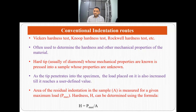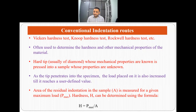In this approach, we have a hard tip — usually diamond — whose mechanical properties are known. As the tip penetrates into the specimen, the load placed on it is increased until it reaches a user-defined value. When we perform this experiment, we get the area of residual indentation, that is A, and we can calculate the hardness based on that area and the maximum load specified by the user. So hardness can be determined using the formula H = Pmax / A.